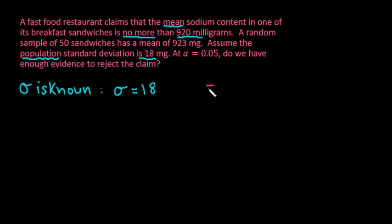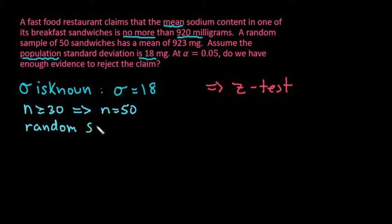We use the z-test when we know the population standard deviation. We use the t-test when we know the sample standard deviation. So since sigma is known, the other two things that we need to look at is our sample size, which needs to be greater than or equal to 30 or normally distributed. Since we have n equals 50, we have a large enough sample size and we also need to have a random sample. These are the conditions that the textbook that I currently teach from uses. If you use a different textbook, make sure to refer to your textbook for all of the conditions that are required.